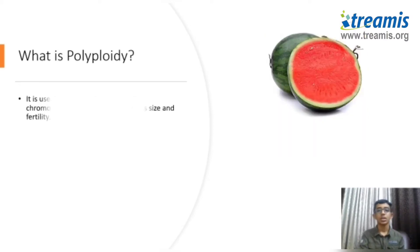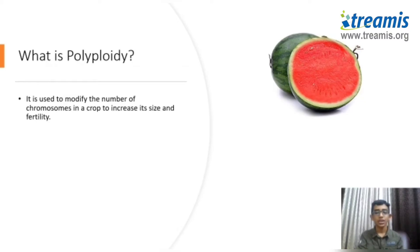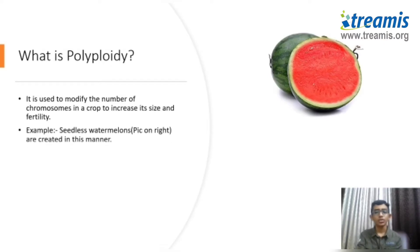Next up, polyploidy. It is used to modify the number of chromosomes in a crop to increase its size and improve its fertility rate. Scientists have come up with a way to produce seedless watermelons through polyploidy.